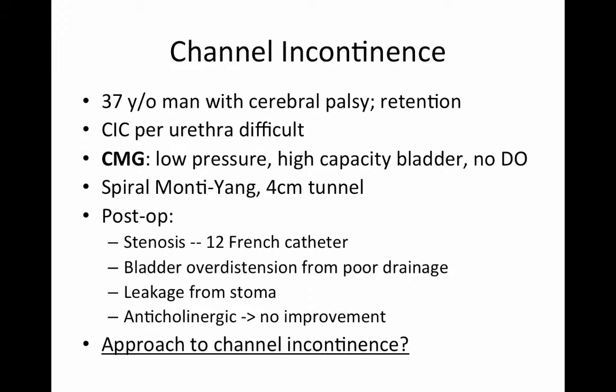The second case is an example of channel incontinence. A 37-year-old man with cerebral palsy and urinary retention performs clean intermittent catheterization per urethra, but that's becoming increasingly difficult. A cystometrogram demonstrates a low-pressure, high-capacity bladder with no detrusor overactivity. Therefore, he decides to proceed with the creation of a catheterizable channel to his abdominal wall to ease intermittent catheterization. Because of the length between his native bladder and the umbilicus, a spiral Monti-Yang channel is created with a 4-centimeter detrusor tunnel.